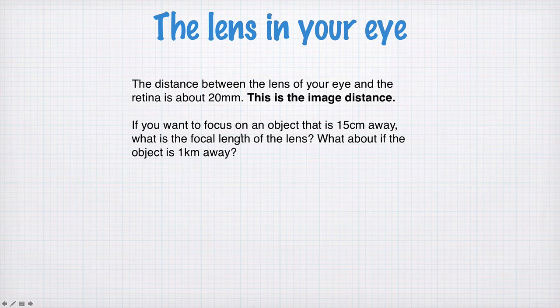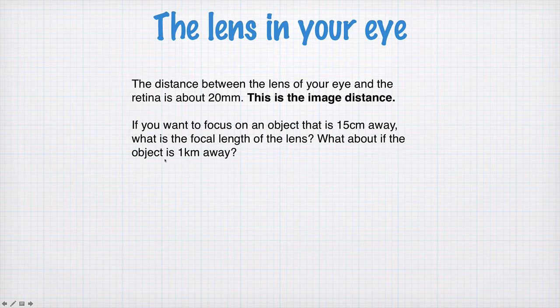Let's say you want to focus on an object that's 15cm away—typically the closest your eye can comfortably focus. What's the focal length of the lens in this case? And what about when the object is a kilometer away?